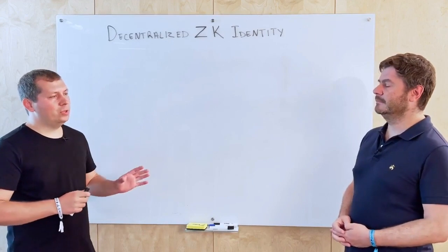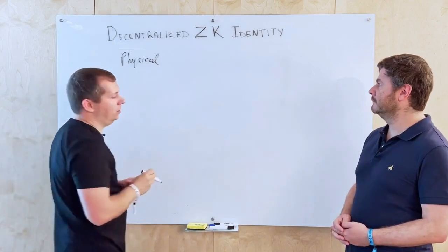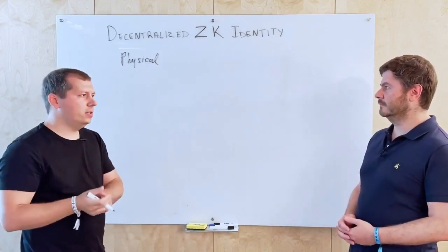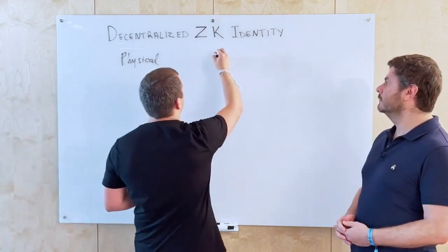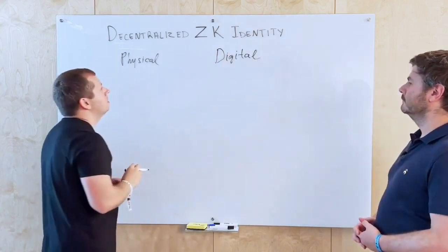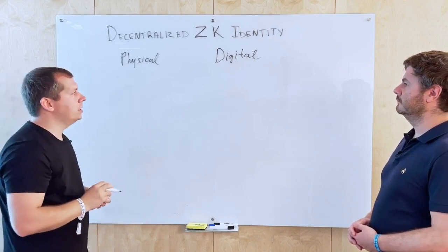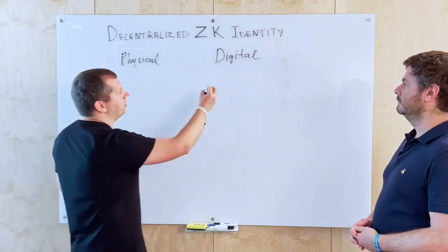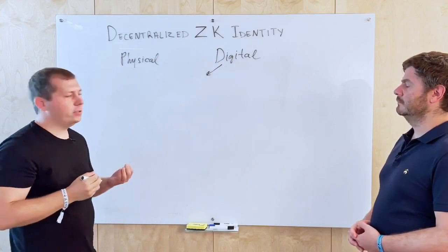There are two big groups of identity. There are physical identities — like passport, driver's license, diploma, and other paper documents. And then there is a big other group: digital identities. With digital identities we have different subgroups. It was an evolution — the first one was siloed identities, or we can say centralized ones.